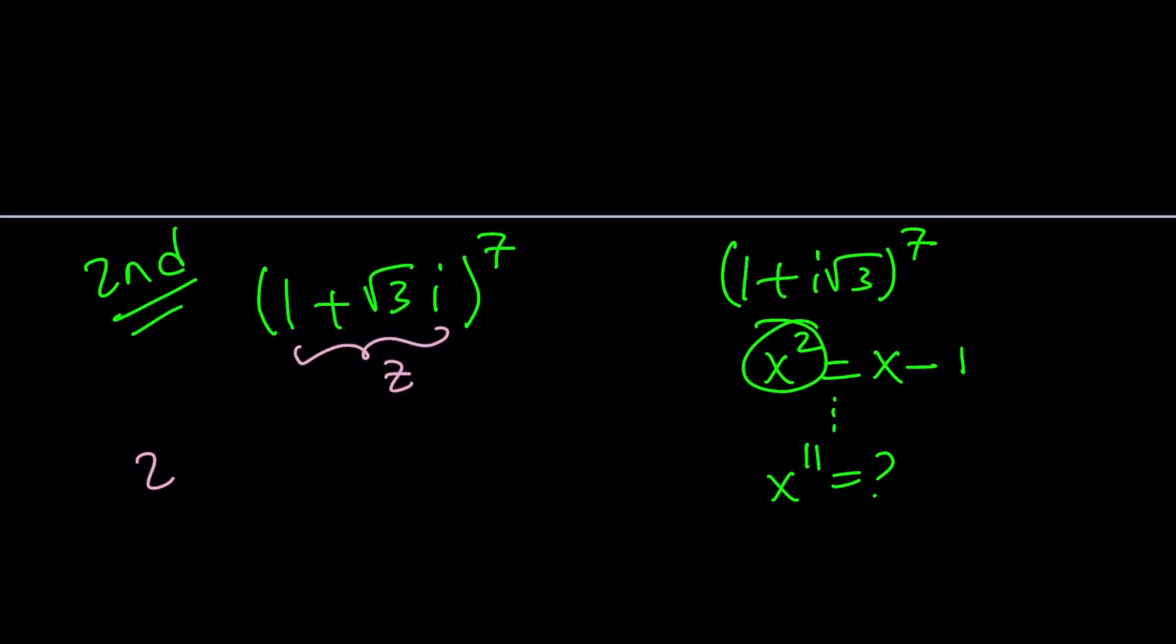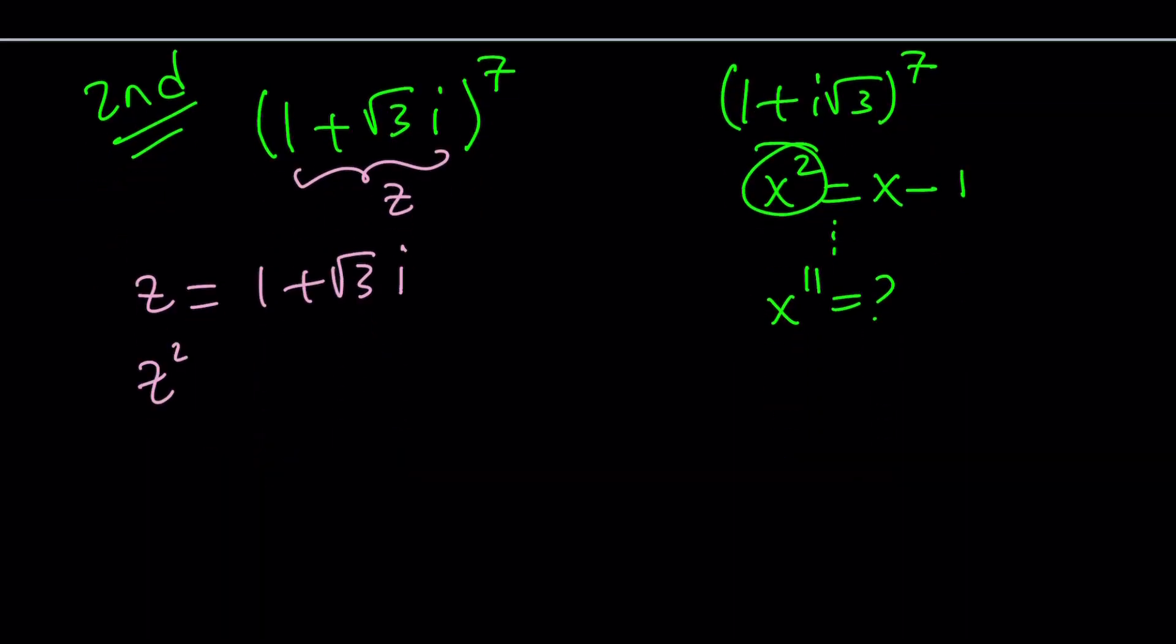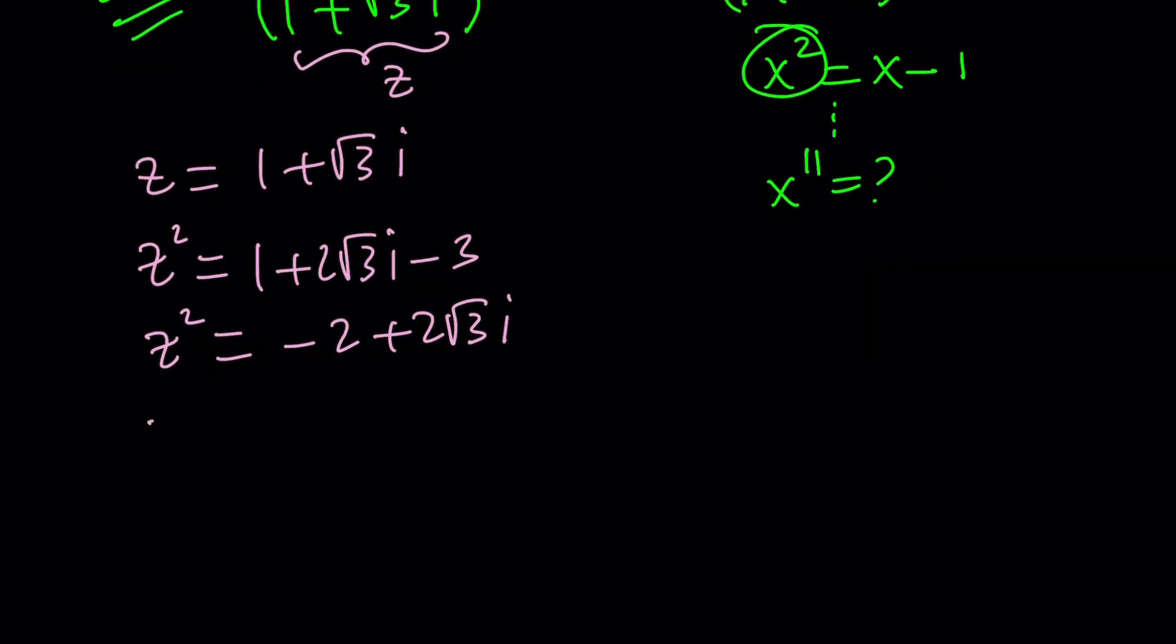Let's go ahead and call this number Z. So Z is going to be one plus square root of three I. I'm just going to square Z. If you square it, you're going to get one plus two root three I plus three I squared, which is negative three. So Z squared would be negative two plus two root three I. So Z squared is sort of like a conjugate of Z but with a negative two in the front.